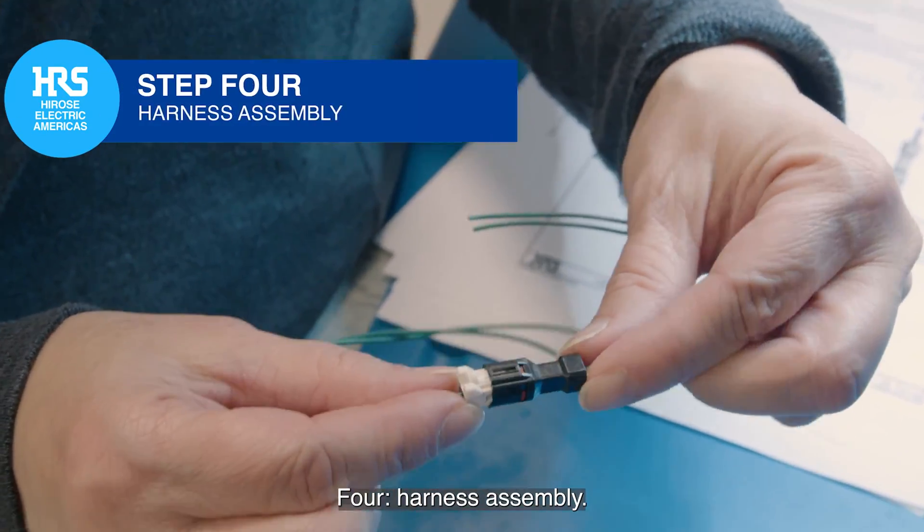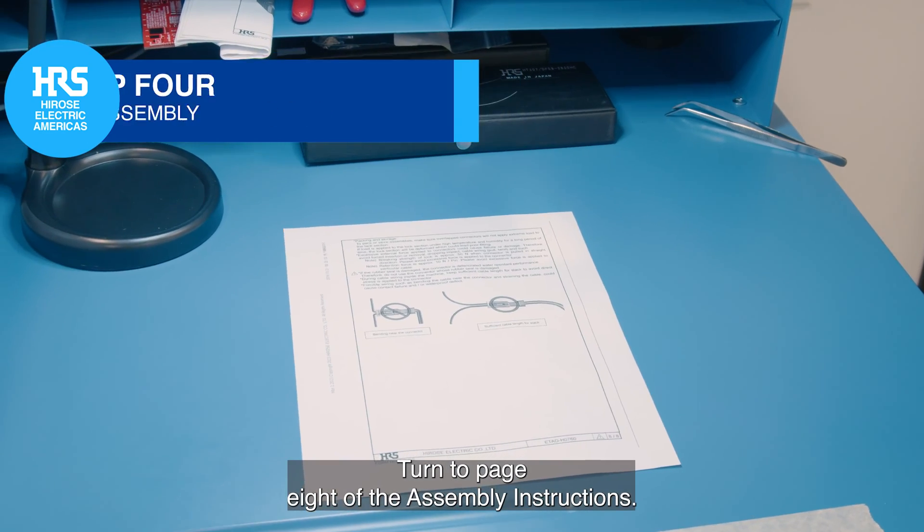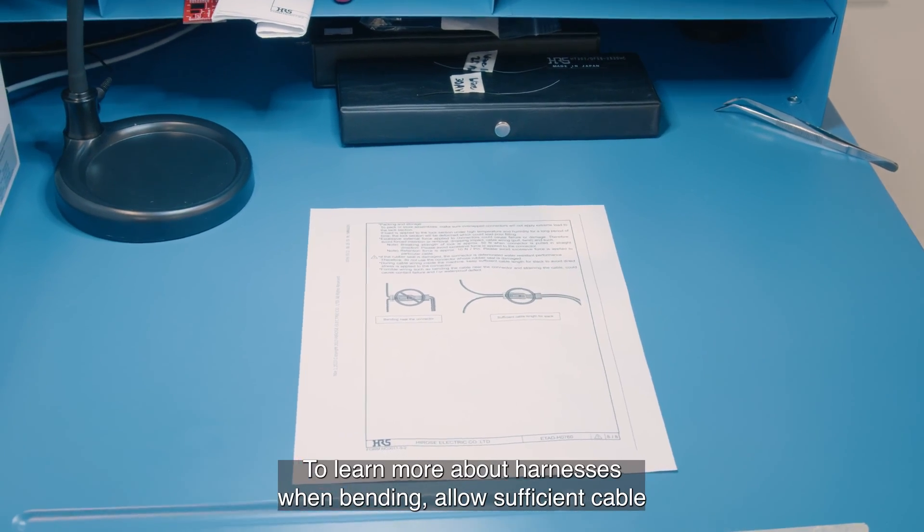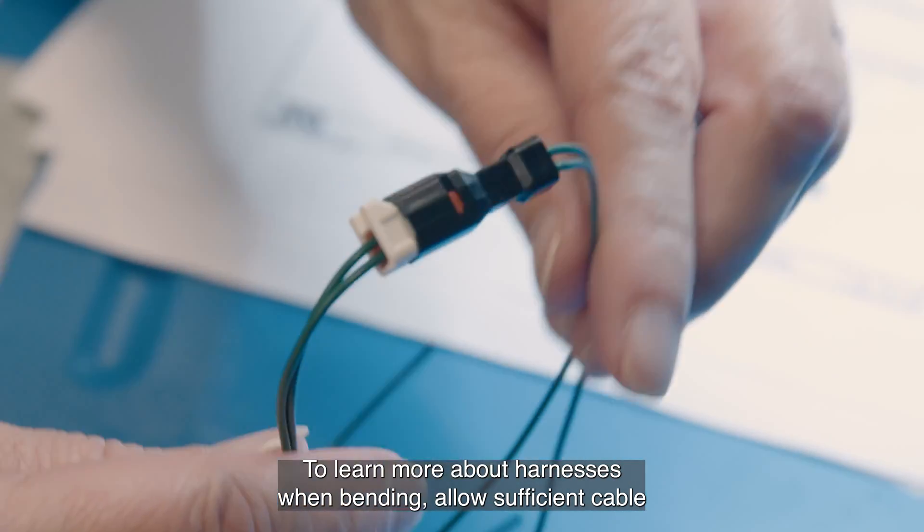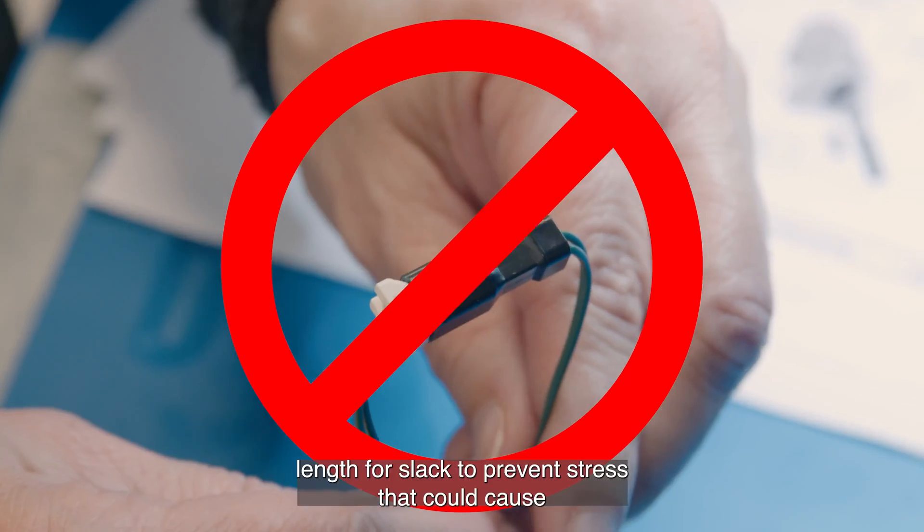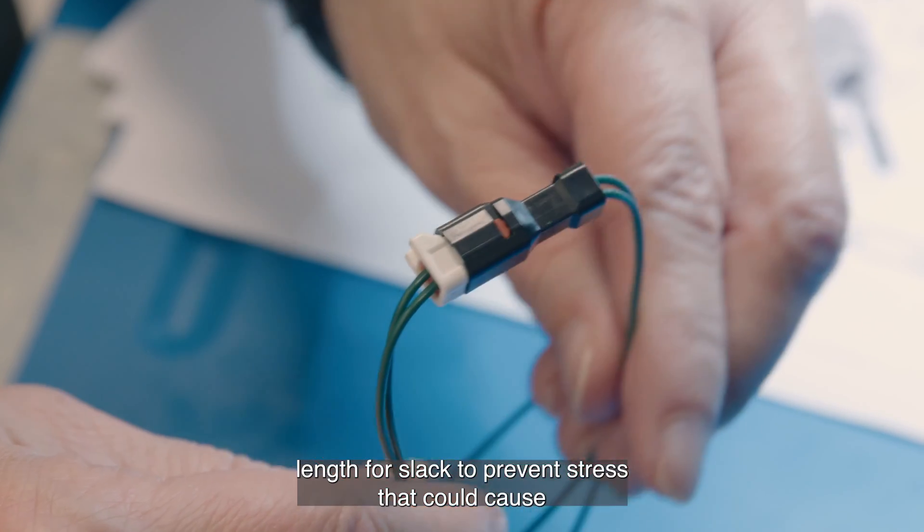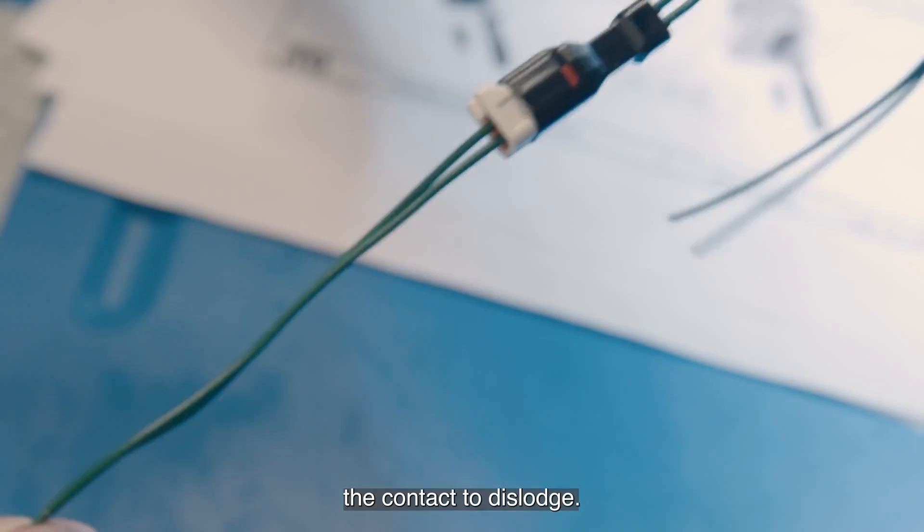4. Harness Assembly. Turn to page 8 of the assembly instructions to learn more about the harnesses. When bending, allow sufficient cable length for slack to prevent stress that could cause the contact to dislodge.